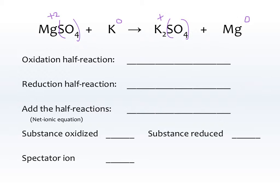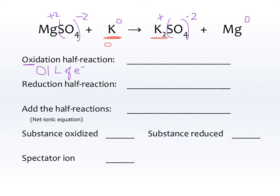This wouldn't be the case if you had a sulfate on the left and a sulfite on the right — then you would need to look at them individually. But as a group, sulfate is a negative two on both sides. That's all of our oxidation numbers. Now we want to know which thing is being oxidized. Oxidation is loss of electrons, gain in charge. The thing gaining in charge is potassium, because it's going from K zero to K plus. So potassium is the thing that is oxidized.